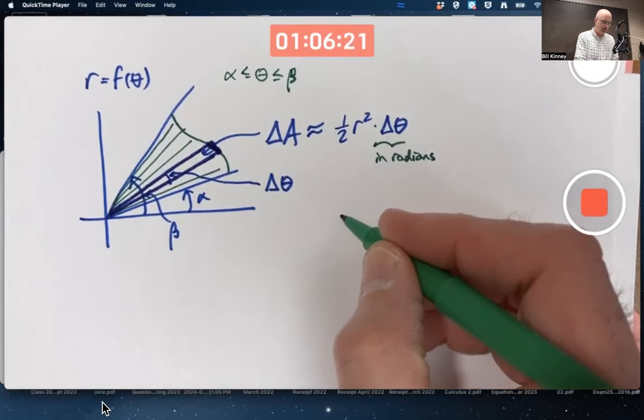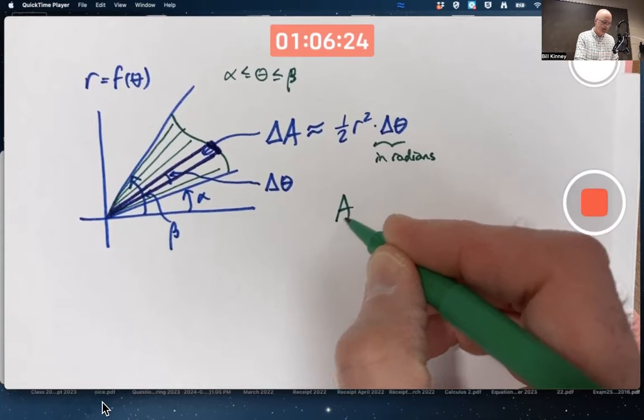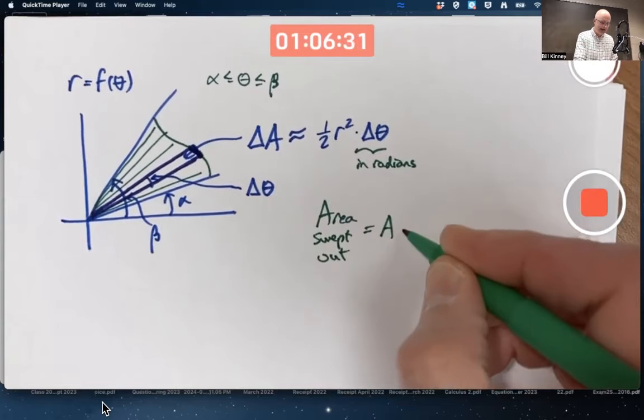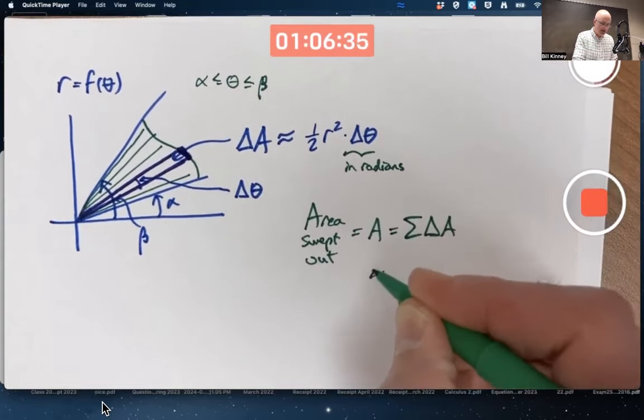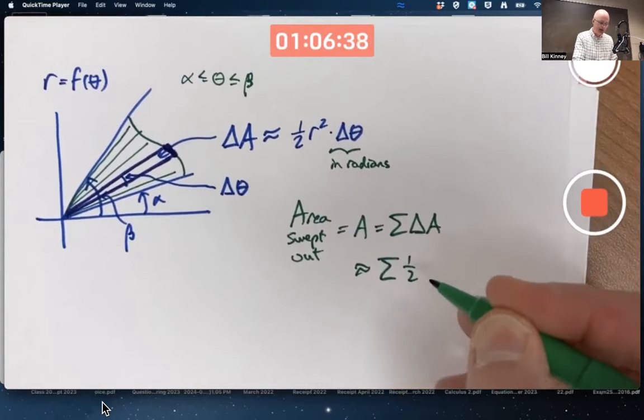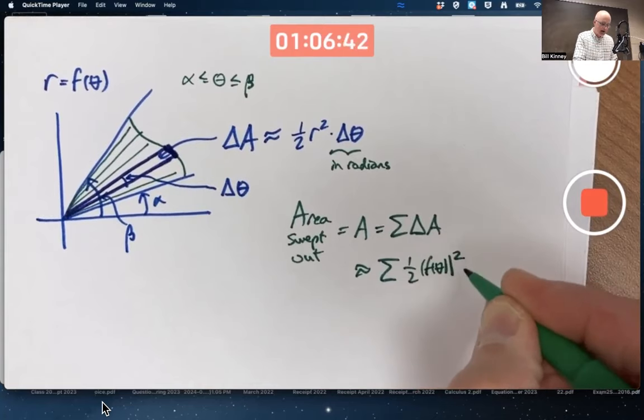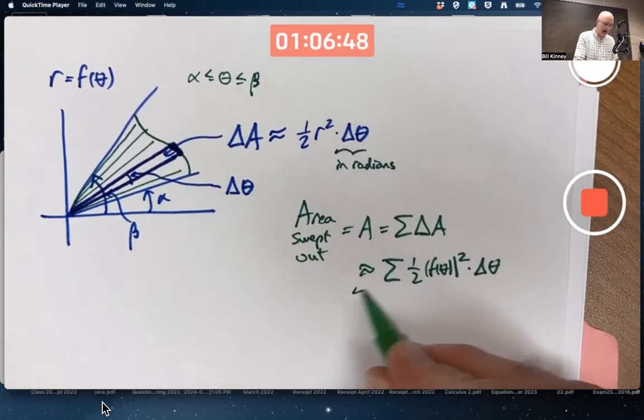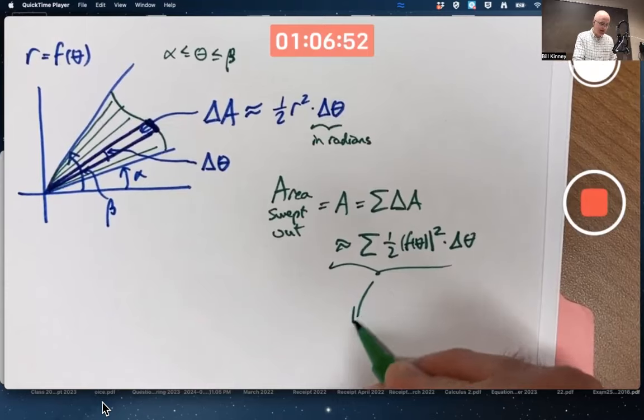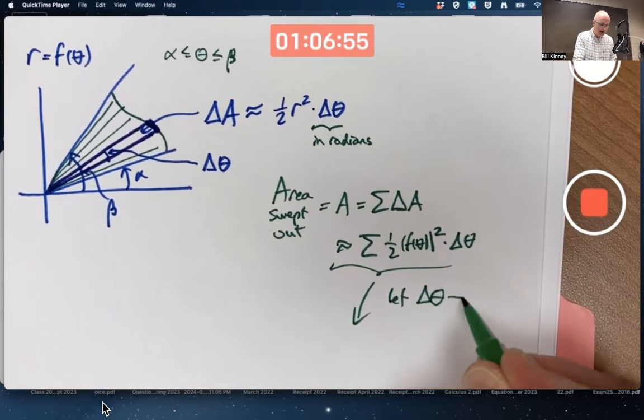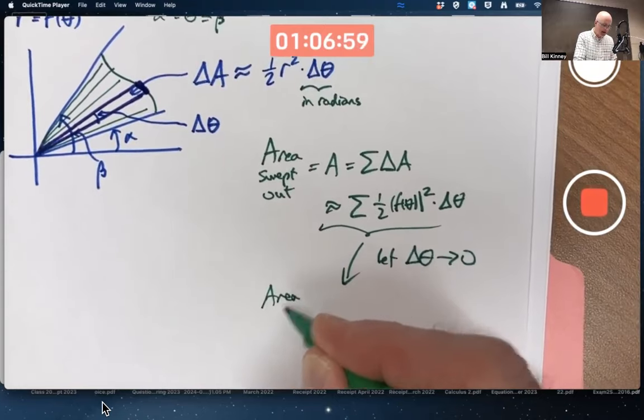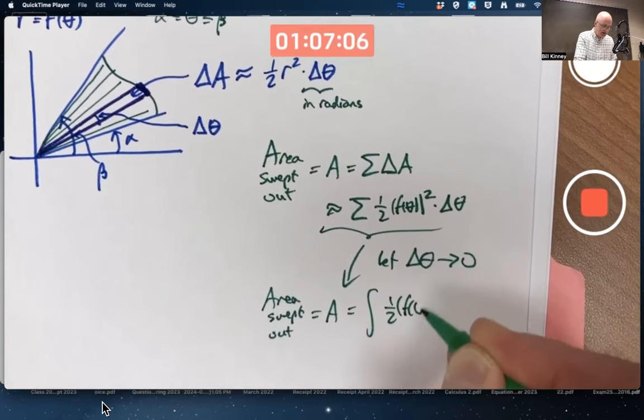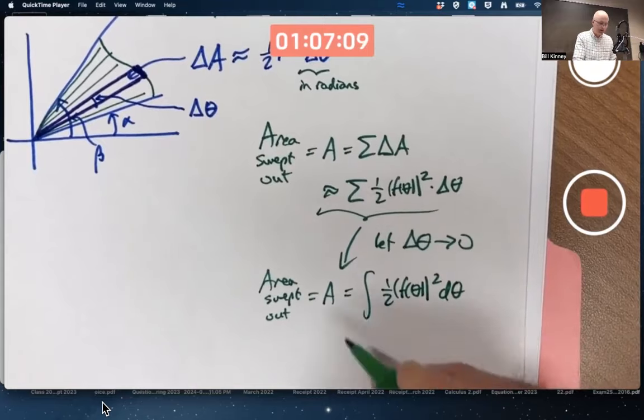We're working toward an integral here. The total area swept out, call it A, is the sum of the delta A's, which will be approximately the sum of one half R squared times delta theta, where R is F of theta. That's a Riemann sum for the integral of the function one half F of theta squared. Let delta theta go to zero. The area swept out A is going to be the integral of one half F of theta squared over the interval from alpha to beta.